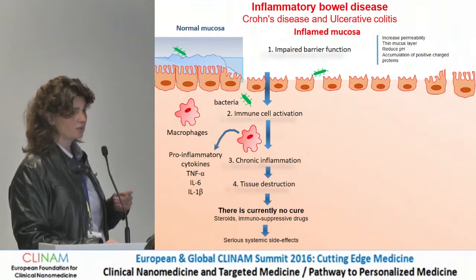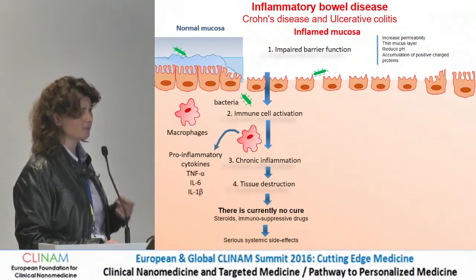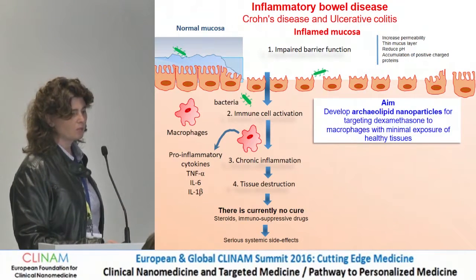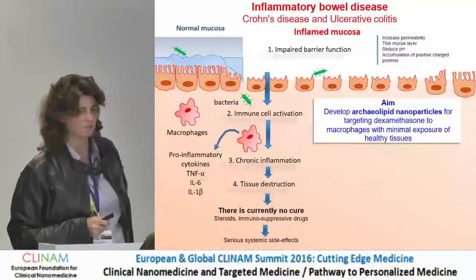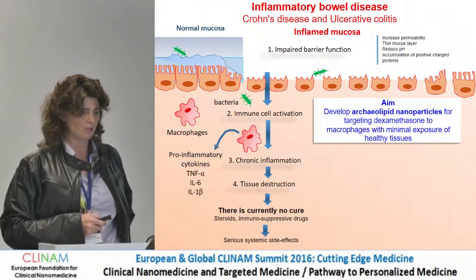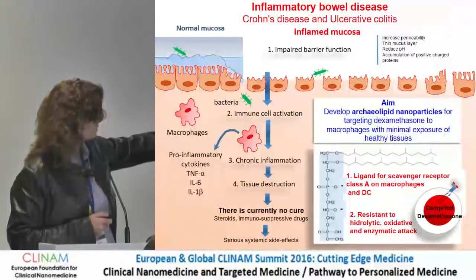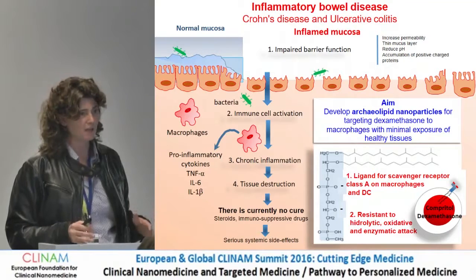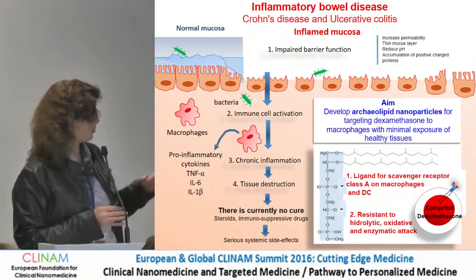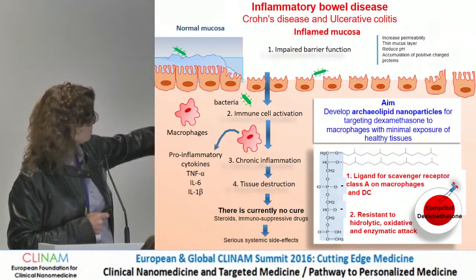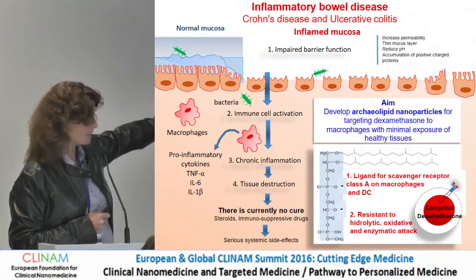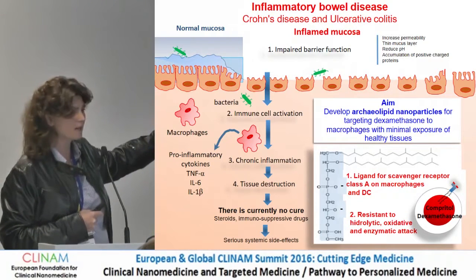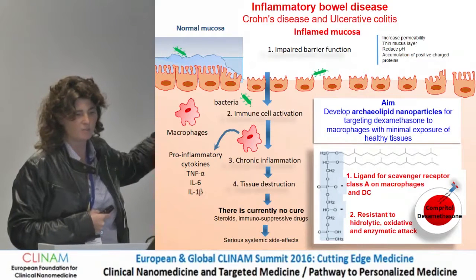Macrophages play a principal role in maintaining inflammation because they produce a large amount of pro-inflammatory cytokines. There is currently no cure for this disease — treatment is symptomatic, and the frequent oral intake of anti-inflammatory and immunosuppressant drugs causes severe systemic side effects that diminish quality of life. The aim of this project is to develop archaeolipid nanoparticles for targeting the anti-inflammatory dexamethasone to macrophages with minimal exposure of healthy tissue. Archaeolipid nanoparticles are made of a core of triglyceridyl compound and a surface made of archaeolipids — lipids extracted from halophilic archaeobacteria. They are natural ligands of scavenger receptors class A, mainly expressed on macrophages and dendritic cells.